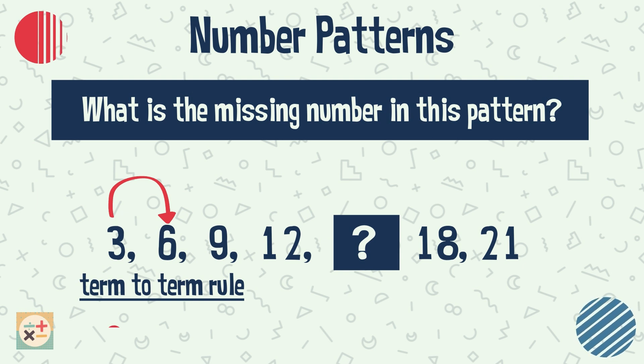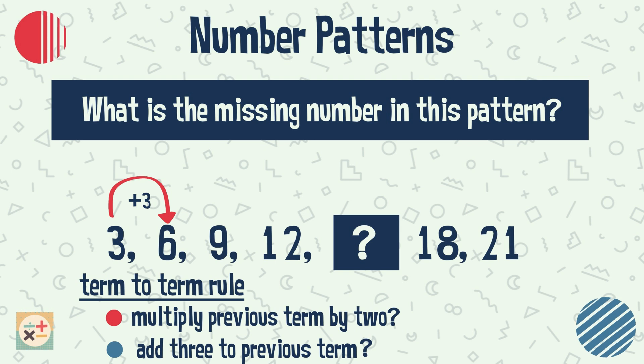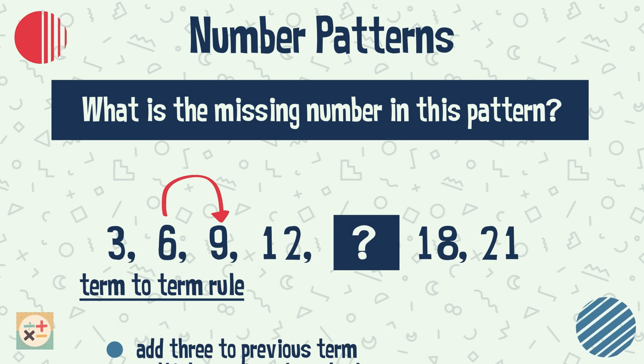Looking at this term, we can see that by multiplying by 2 we cannot get 9, so we can disregard this assumed relationship. However, we can see that if we add 3, we do get 9. Let's check this works for the next term.